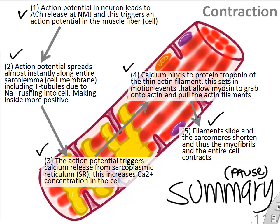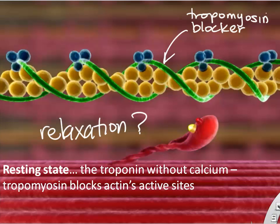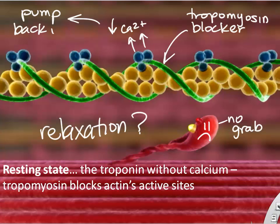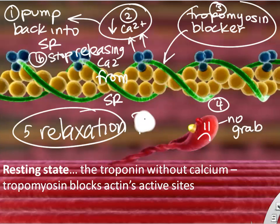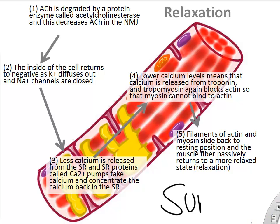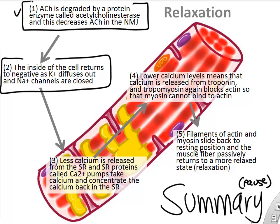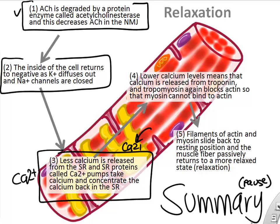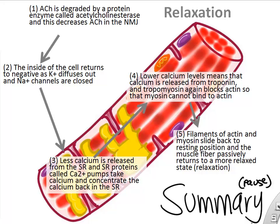For relaxation, calcium must be pumped back into the SR. When calcium leaves troponin, tropomyosin returns to the blocker position and myosin heads can no longer grab actin. The cell stops receiving signals to release calcium, calcium concentration in the cell drops, and troponin moves tropomyosin back into place. The steps for relaxation include: stop releasing acetylcholine, return the cell interior to negative charge, put calcium away, and then actin and myosin no longer bind — muscle cell is relaxed.